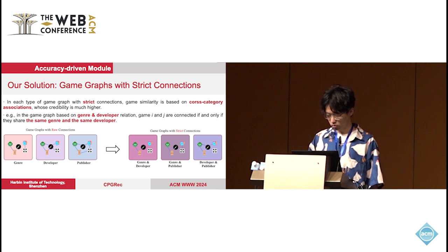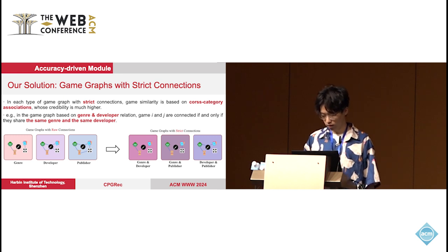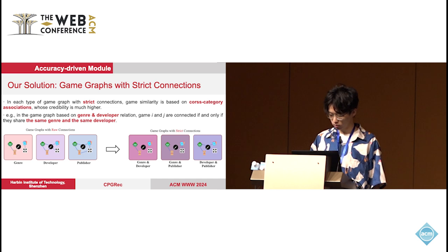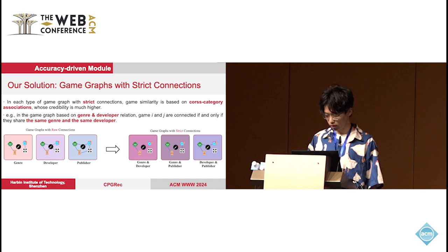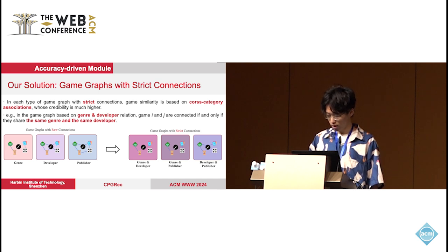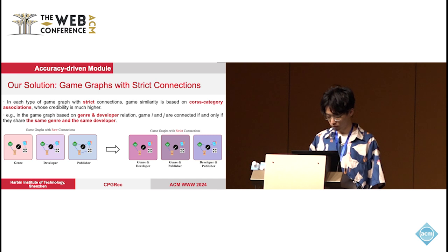To solve this problem, in contrast, we build graphs we call game graphs with strict connections, where game similarity is based on close category associations. For example, in the game graph based on genre and developer relations, game i and j are one-hop neighbors if and only if they share not only the same genre but also the same developer. Thus the threshold for connecting and the credibility become much higher. Based on this rule, there are three game graphs with three strict connections, where we get a game representation from each one. We introduce an attention mechanism to automatically judge the importance of these three relations.